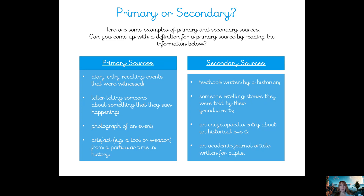What have they all got in common? Here are some examples of secondary sources: a textbook written by a historian, someone retelling stories they were told by their grandparents, an encyclopedia entry about a historical event — something written down about a historical event by someone who has learned about it — and an academic journal article written for pupils. Is it primary or secondary sources that are written or taken from the event itself? And which are written by people who didn't actually witness it?